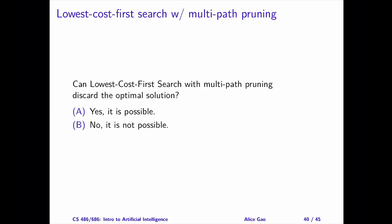Let's consider LCFS first. Can LCFS with multipath pruning discard the optimal solution? If your answer is no, you need to explain why. If your answer is yes, you need to come up with an example of when this happens. Pause the video and come up with an answer. The answer is no — this is not possible. LCFS with multipath pruning is still optimal. Please watch a separate video for a detailed explanation.